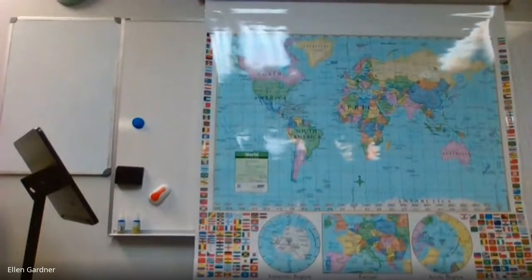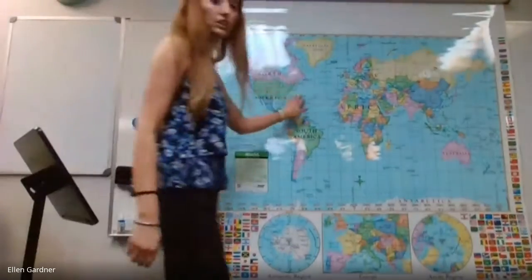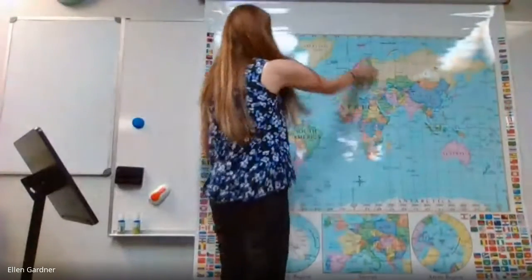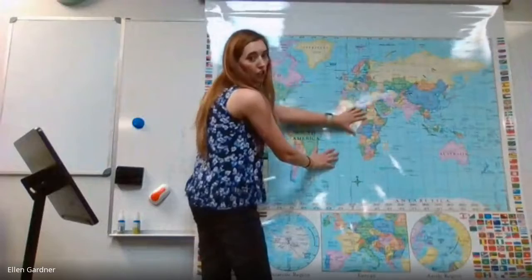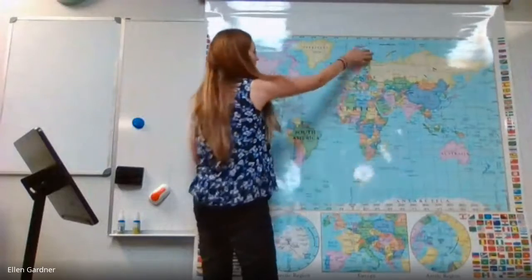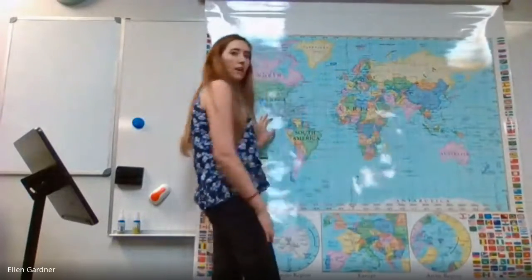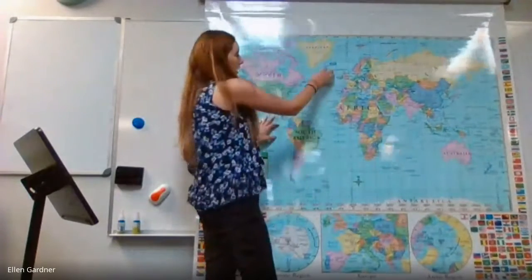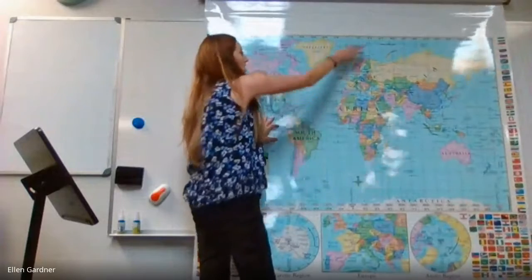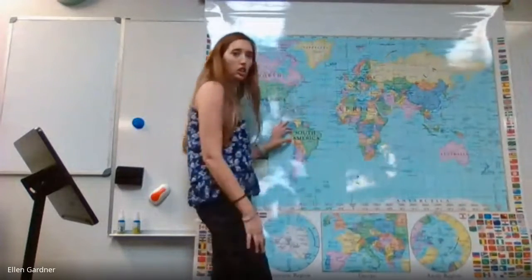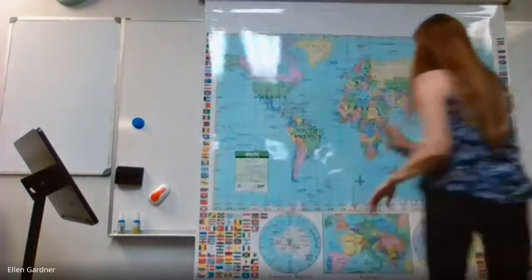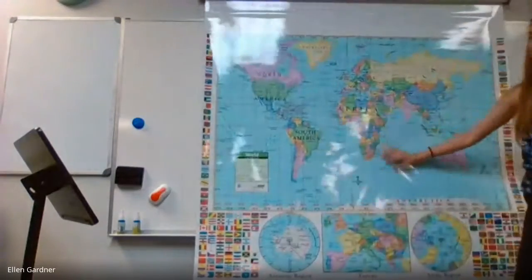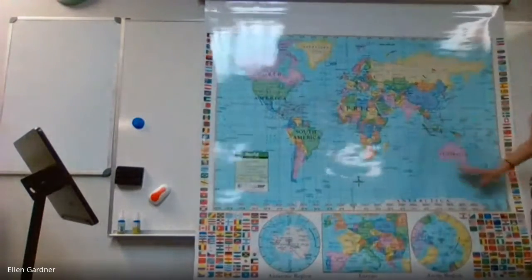The Atlantic Ocean is between North and South America and Africa and Europe. On my map it shows it as North Atlantic and South Atlantic, but altogether it's just the Atlantic Ocean. We also have the Indian Ocean here, just south of India.